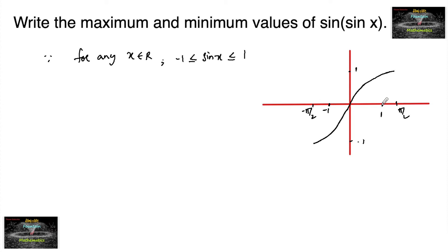We can observe that when sin x = 1, we get sin(1), and when sin x = -1, we get sin(-1) which equals -sin(1). The value of sin x lies between minus 1 and plus 1.